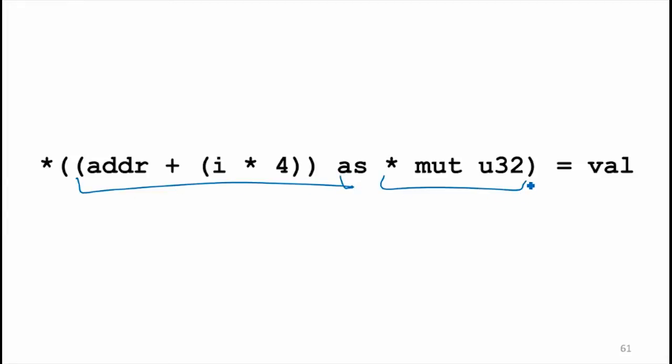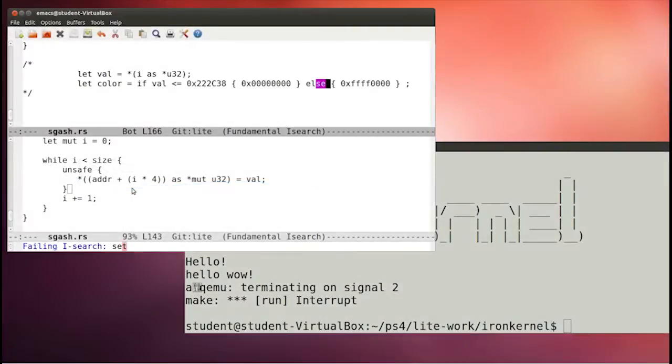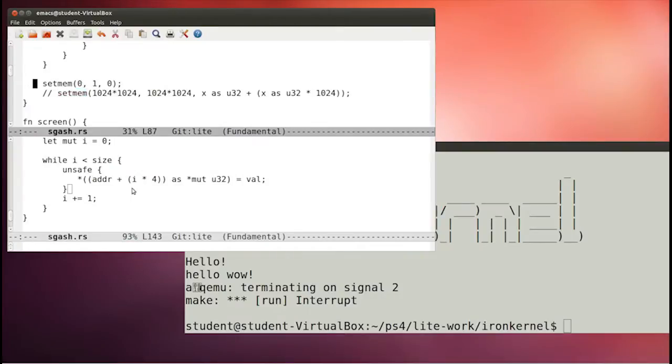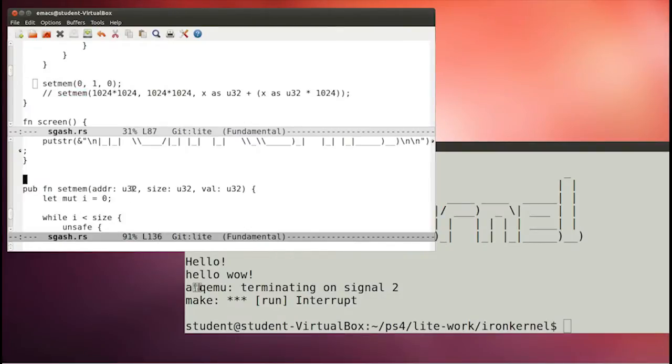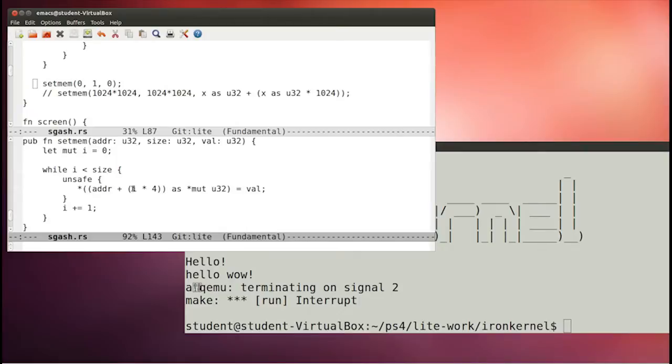We're treating that as a mutable pointer to a 32-bit unsigned. And we're assigning some value to it. And the value in this case that I'm passing in, I'm calling it with 0, 1, and 0. So the value is going to be 0. It's going to assign to the address here that's going to be 0, the value 0, and go through that loop one time.